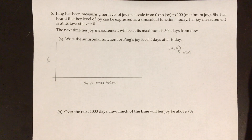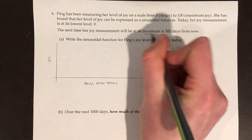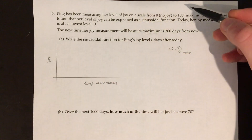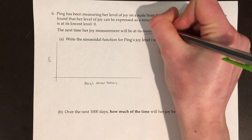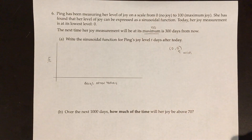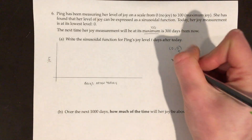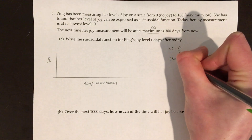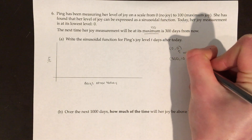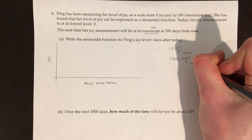The next time her joy measurement will be at its maximum — and we're given that the maximum is 100 — is 300 days from now. So if t is 300 days from now, the coordinate is going to be (300, 100), and that is the max.